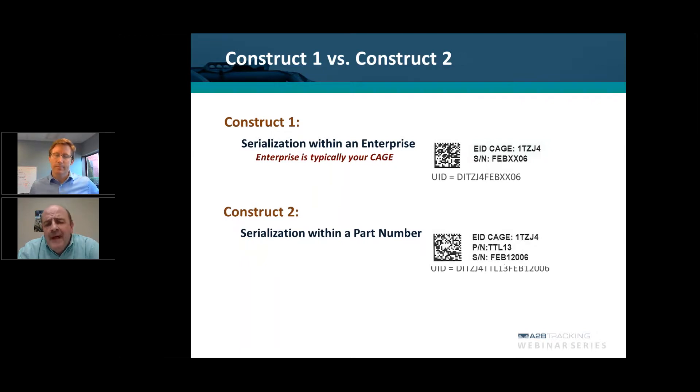On the Construct 2 format, now you're talking about serialization at the part number level. So now you have not only your CAGE code and your serial number, you also have the part number that makes up the UID.